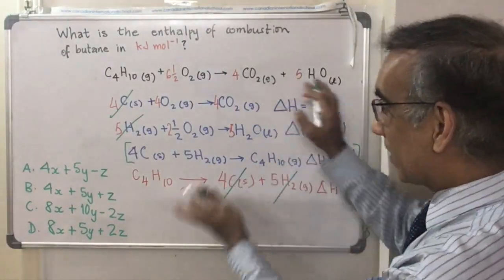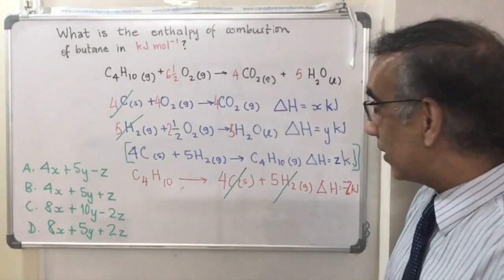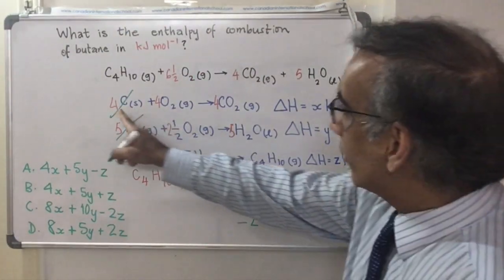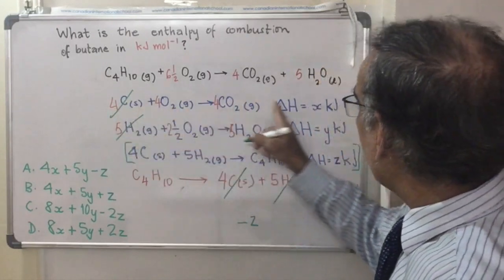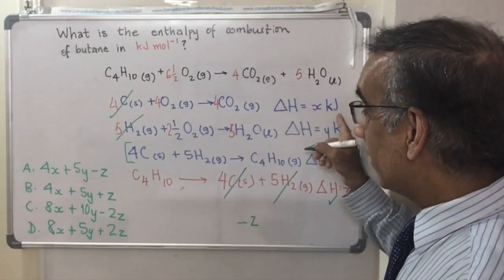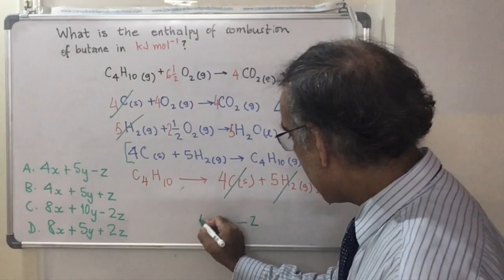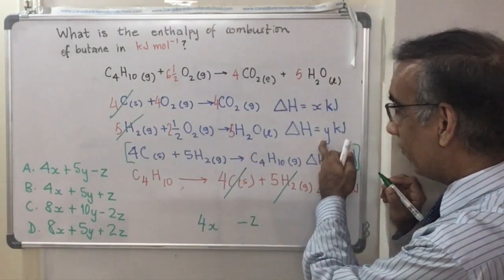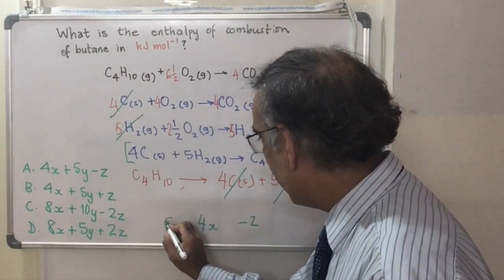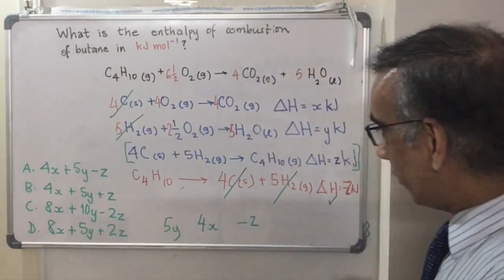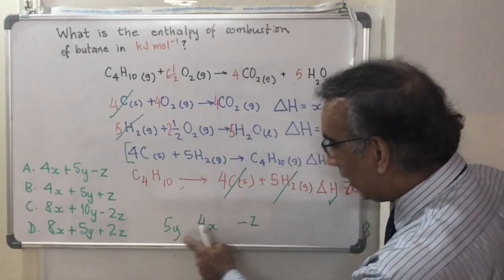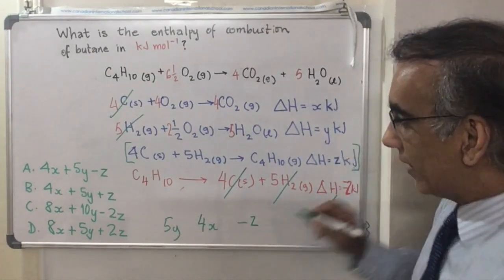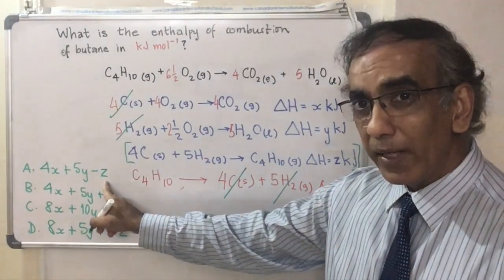So, now, it's just about getting the sum of everything because you've already divided by two for this equation. It's going to be negative Z. This equation here, which was multiplied by four, four X. And this equation here, which was multiplied by five, becoming five Y. So, we're going to have to look for five Y, four X, minus Z in our answer. And that is provided by answer A.